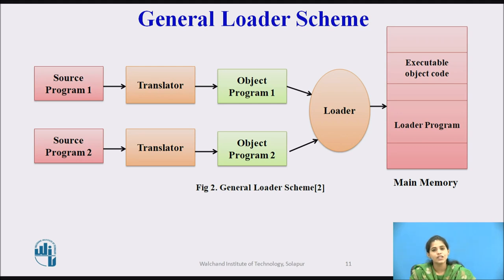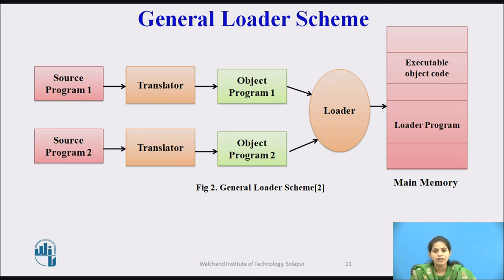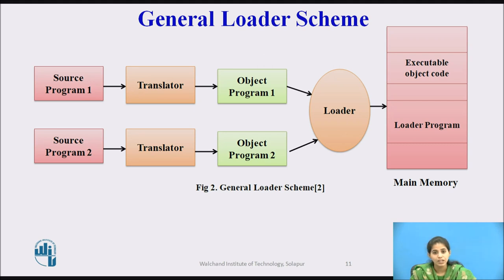This is the figure of the general loader scheme. Here the components are: source program, translator, object program, loader, and main memory. In this scheme, source program one is given as input to translator one. The translator converts source program one into object program one, and object program one is given as input to the loader. The loader then loads that object code into the main memory for execution.